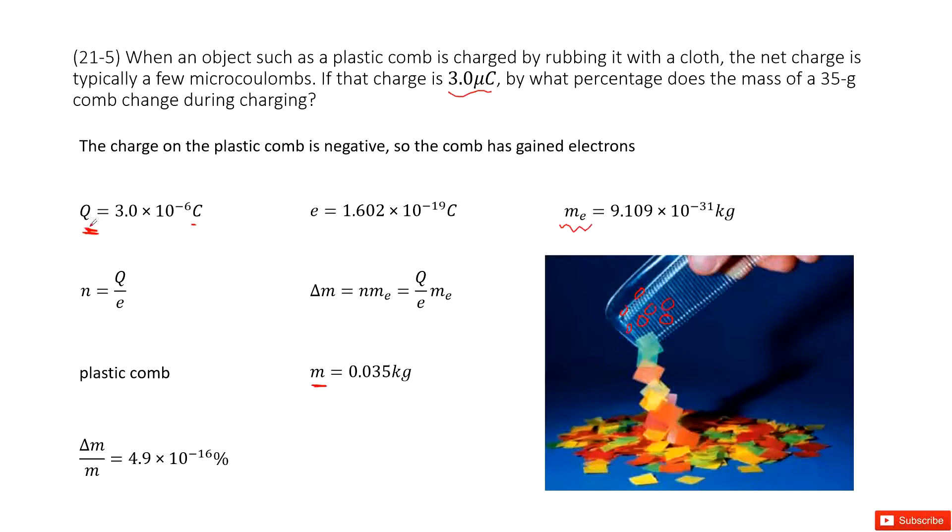Next question. How can you get the number of electrons? You can see the total charge is given Q and the elementary charge for one electron is given e, right? So you use the total charge Q divided by elementary charge. You get the number of electrons.